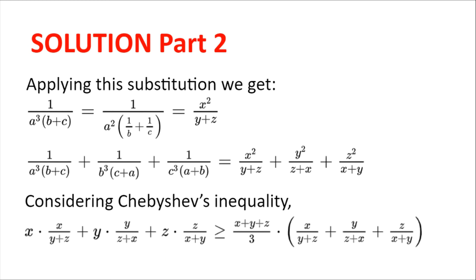Now applying the substitution to the whole of the left hand side, we get x squared divided by (y plus z), plus y squared divided by (z plus x), plus z squared divided by (x plus y). Now considering Chebyshev's inequality, this expression is greater than or equal to (x plus y plus z) divided by 3, multiplied by (x divided by (y plus z) plus y divided by (z plus x) plus z divided by (x plus y)).